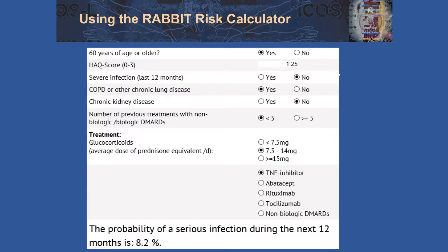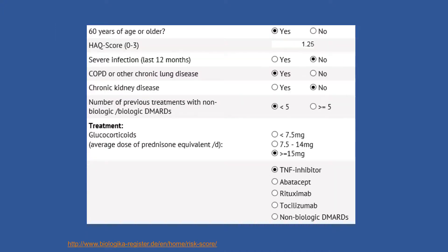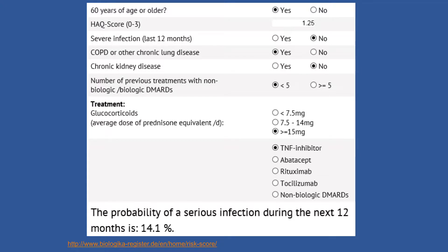The tool gives a probability of serious infection during the next 12 months of 8.2%. If you increase her prednisone dose to 15 milligrams or greater and calculate again, this has almost doubled her risk of serious infection. I like to use this a lot — it's a really nice tool. Think about using it next time you have a patient in clinic and are discussing escalating their treatment.